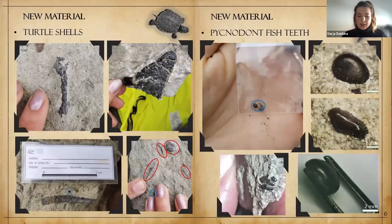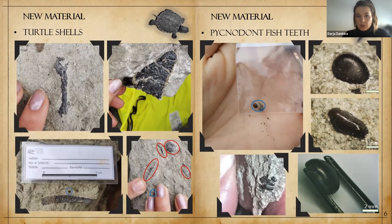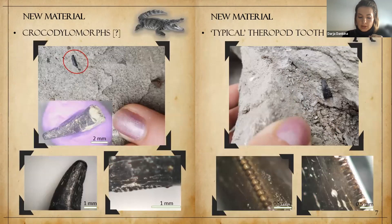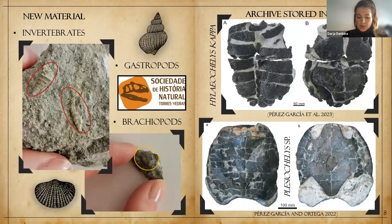During our field trips, my colleagues and I found many isolated parts of turtle shells — according to the number of finds, this would be the most dense fossil group here. Less common but still present were pycnodont fish teeth, single units of crocodilomorph teeth, and theropod teeth. Also, some invertebrate groups such as gastropods and brachiopods were found. All this new material, together with already published material from the same formation in nearby areas, is stored at the ACGEN organization.